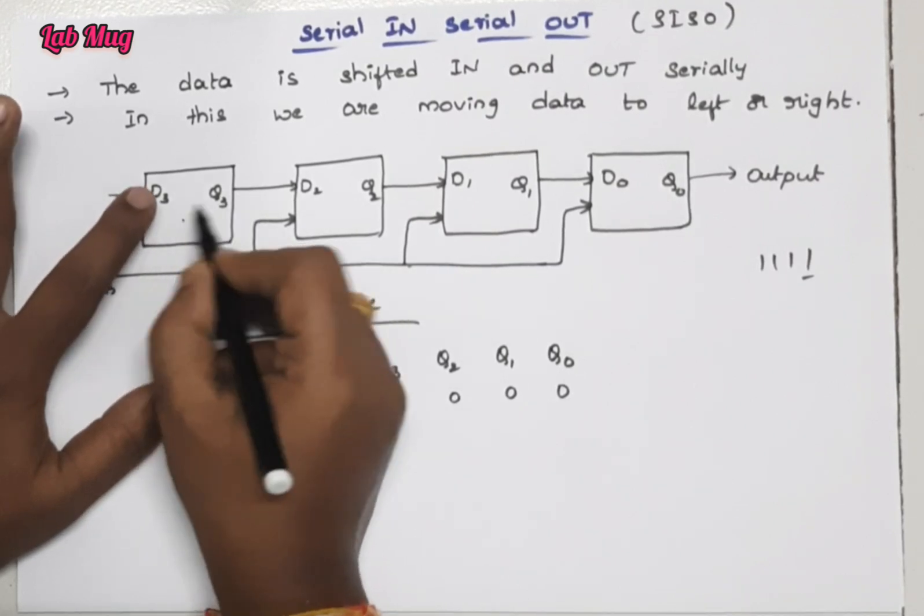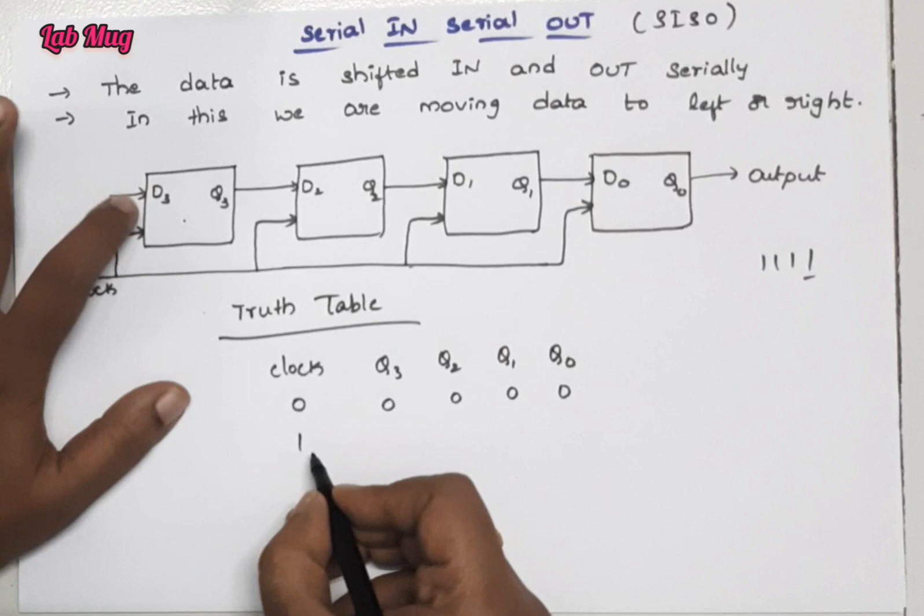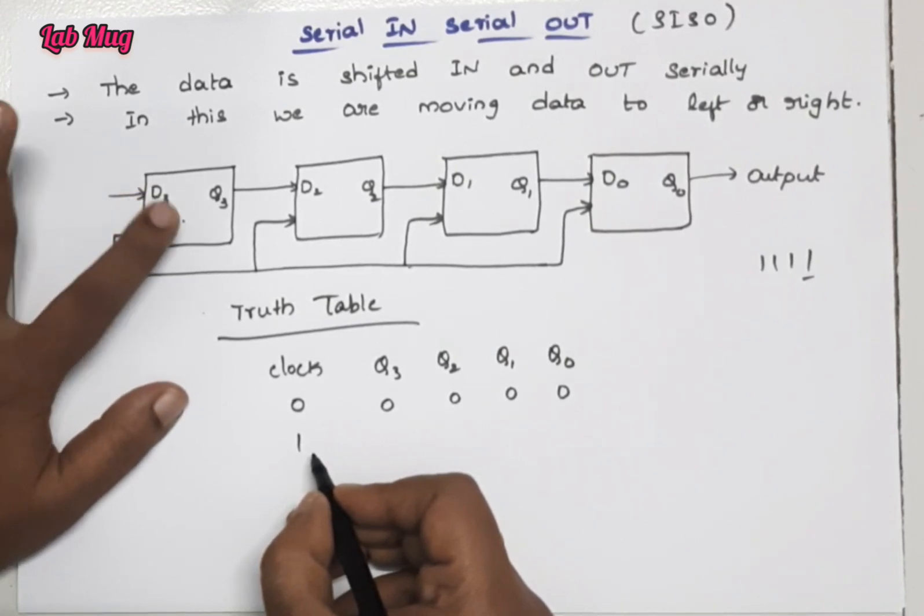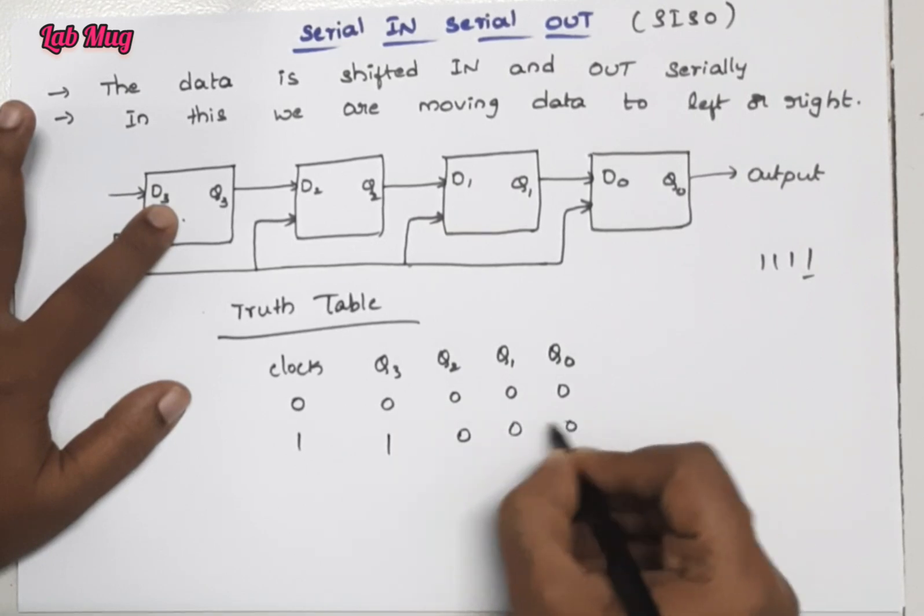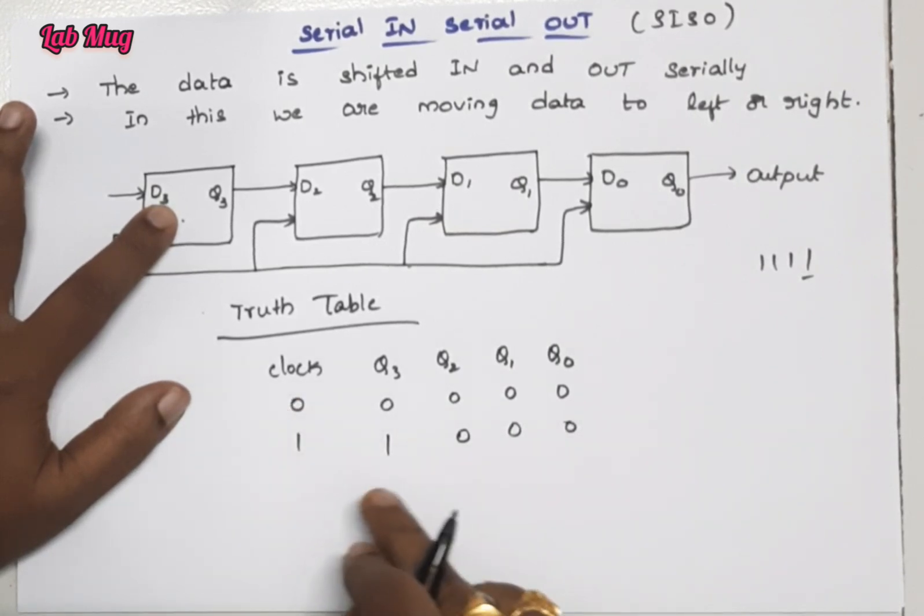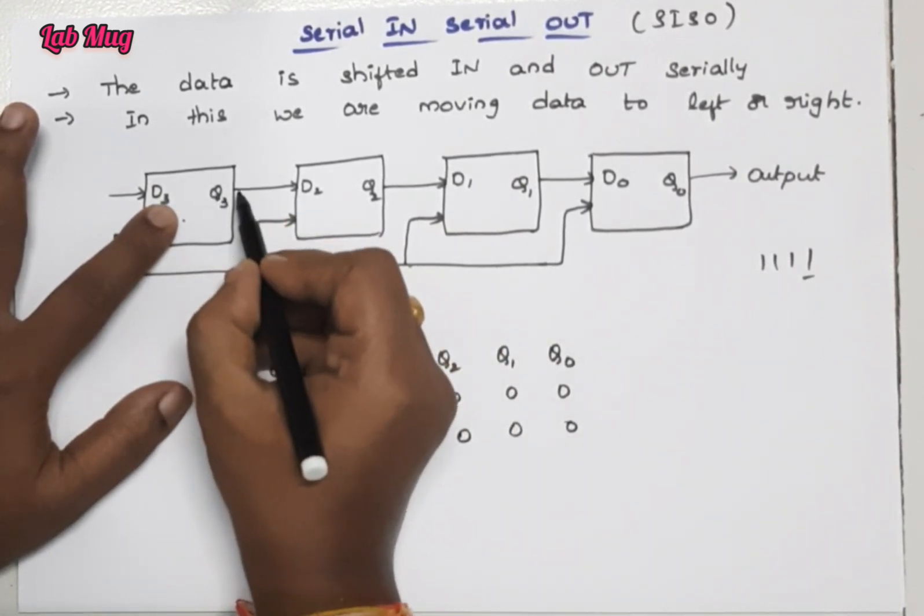When the clock value is one, the D3 input we get as Q3 output from the same flip-flop. So when the clock value is one, then D3 gives the output as one. The remaining values are zero zero zero.